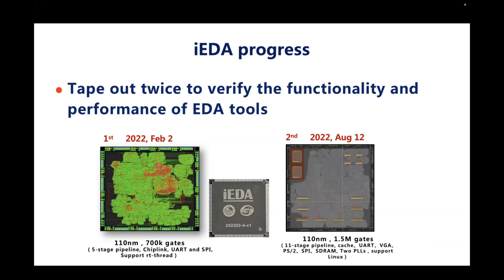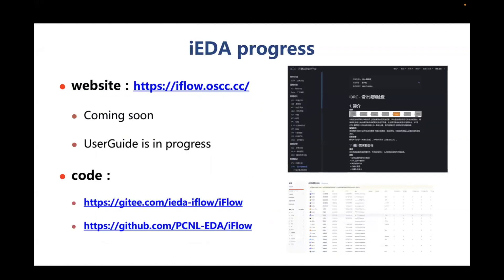The first tape-out is based on 110 nanometers with 700K gates — a five-stage pipeline CPU with chip link, UART, and SPI, supporting the RT-Thread operating system. The second is a 1.5 million gate chip with an 11-stage pipeline processor with cache, UART, VGA, PS2, SPI, and SDRAM with two PLLs, supporting Linux. The first chip is already back and now in testing. Our project website is still under construction and will be online this month, and the code will also be open sourced this month.